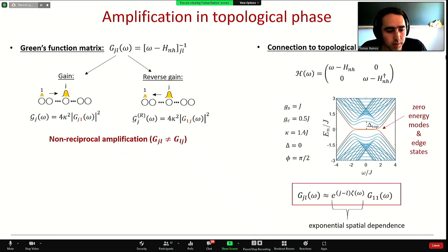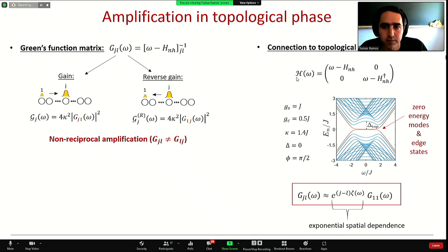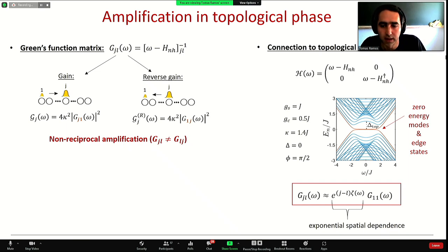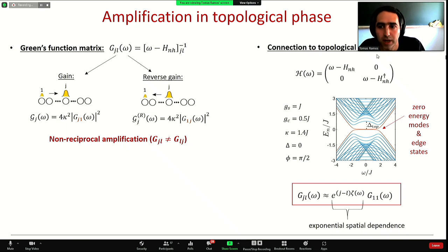To find the parameters that give this asymmetric Green's function, we use a connection of the open quantum system to topological band theory, developed in these papers. We construct an extended Hermitian Hamiltonian from the non-Hermitian one. Since it is Hermitian we can apply topological band theory, and when this extended system is in a topologically non-trivial phase — for instance for these parameters of our system —